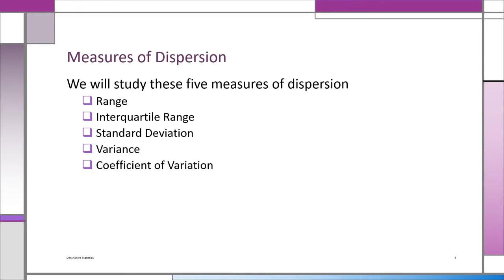What do we mean by dispersion? It's the spread of the data. If all values are very close to each other or to the mean, it has a very small spread. If they're scattered far from each other and far from the mean, that has high dispersion. We're going to look at five measures of dispersion: the range, the interquartile range, standard deviation, variance, and coefficient of variation.